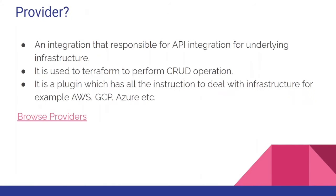In Terraform we have certain terms to understand first. A provider is basically a plugin - an integration that is responsible for API integration with the underlying infrastructure. For example, if you want to create an S3 bucket on AWS, the provider has all the API-related information. It interacts with AWS and converts your HCL - your human readable language - into the form of API calls that AWS can understand in machine form.